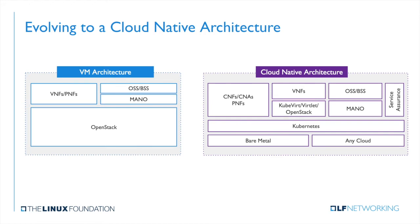Let us look at what it takes to evolve to a Cloud Native architecture. On the left-hand side, we have a virtual machine-based architecture that many of you may be familiar with. On the right-hand side, you have a Cloud Native architecture. The key differences are that VNFs, or virtual network functions, are replaced by CNFs, or Cloud Native Network functions, on the right. The OpenStack layer on the left is replaced by Kubernetes. We also have a new entity on the right-hand side called CNAs, or Cloud Native Applications, which are used for edge computing.